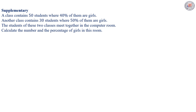Let's take a supplementary exercise. A class contains 50 students where 40% of them are girls. Another class contains 30 students where 50% of them are girls. The students of these two classes meet together in the computer room. Calculate the number and the percentage of girls in this room.